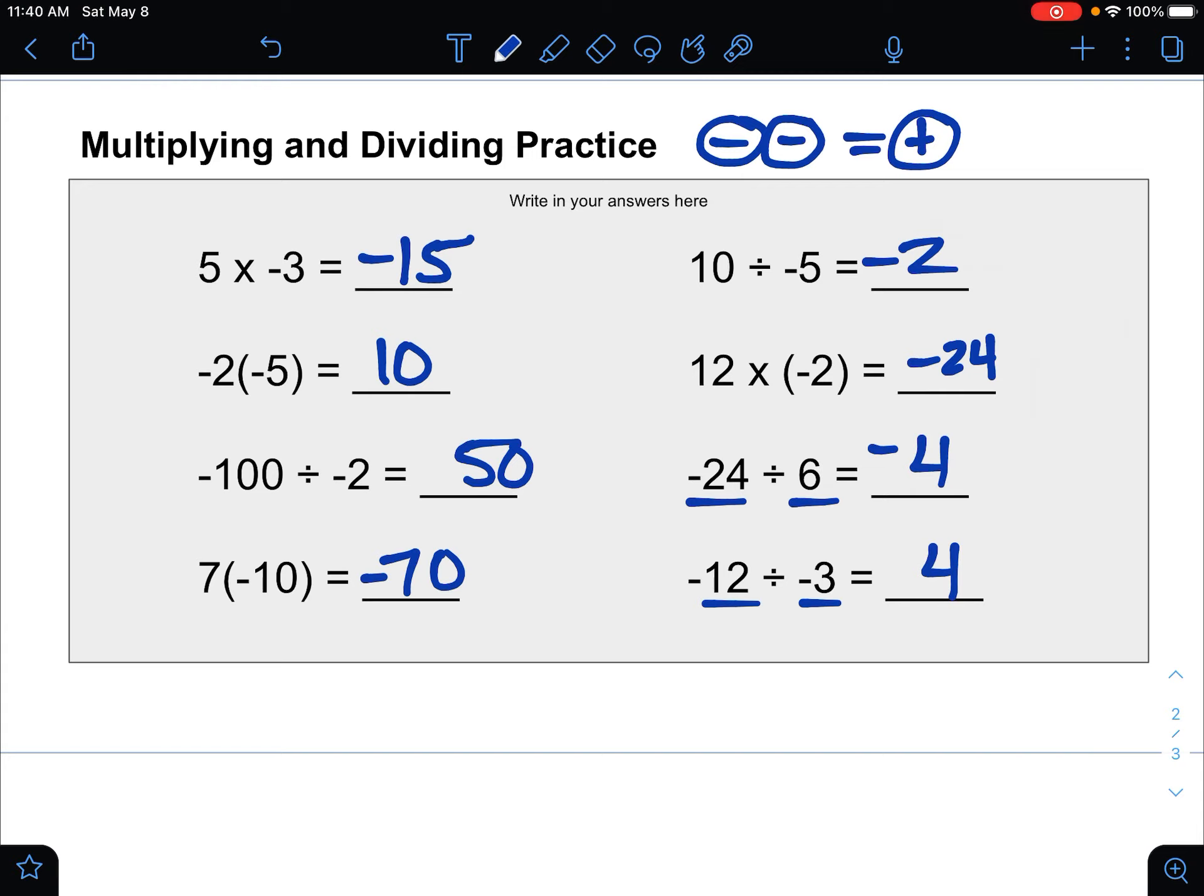That's how we do multiplying and dividing. Just do your multiplying and dividing like normal, and then count the number of negatives. One negative makes the answer negative with multiplying and dividing, and two negatives make the answer positive.